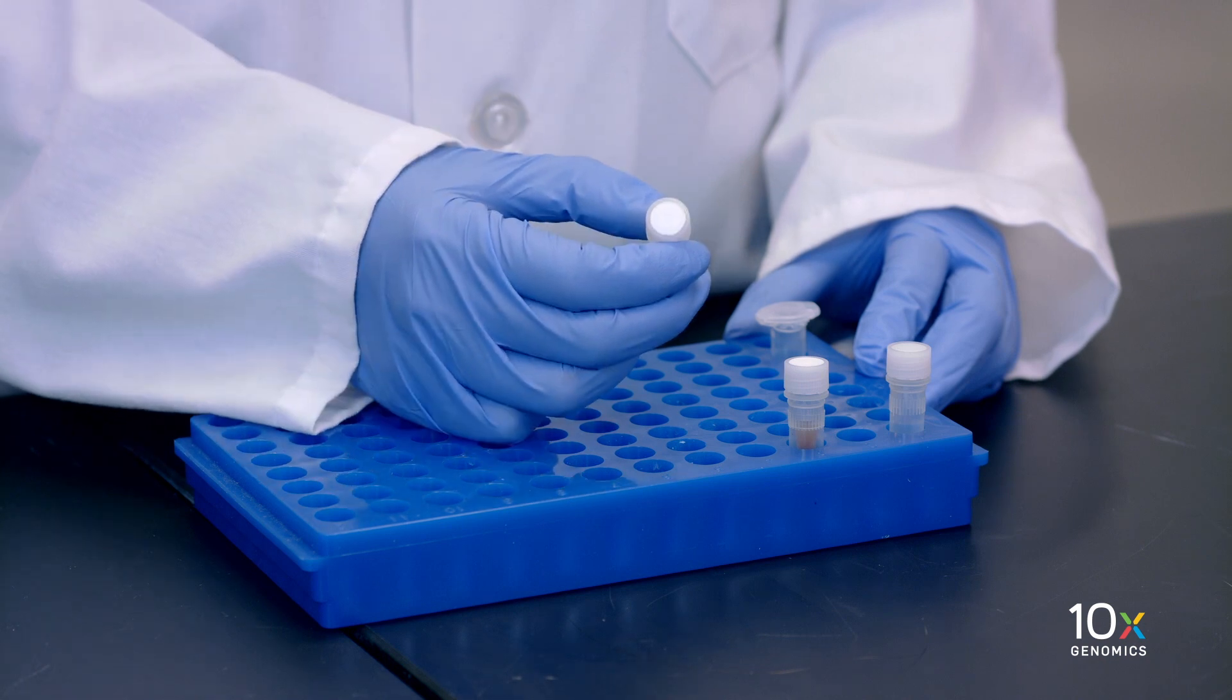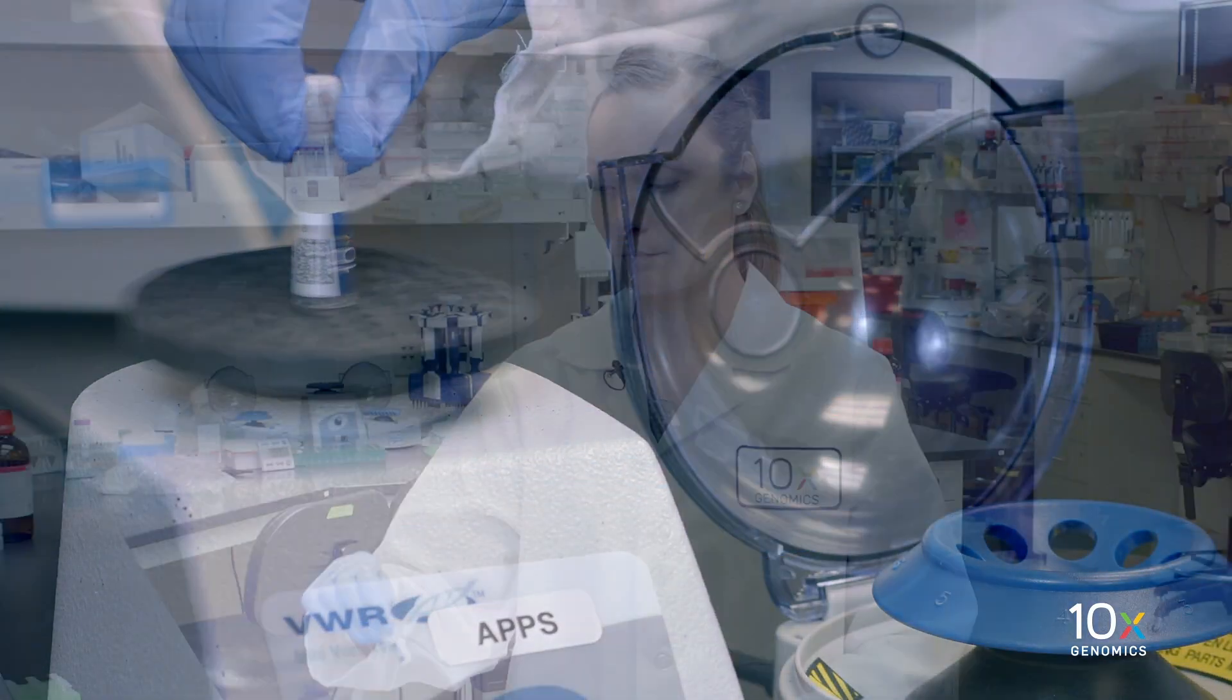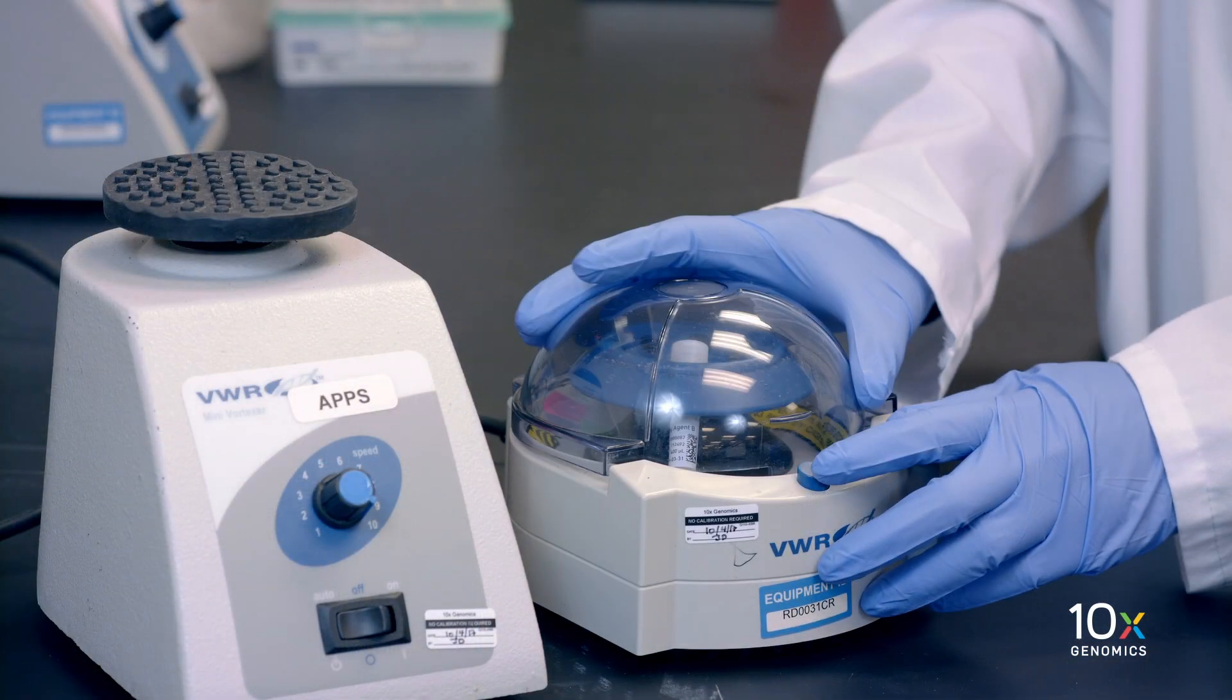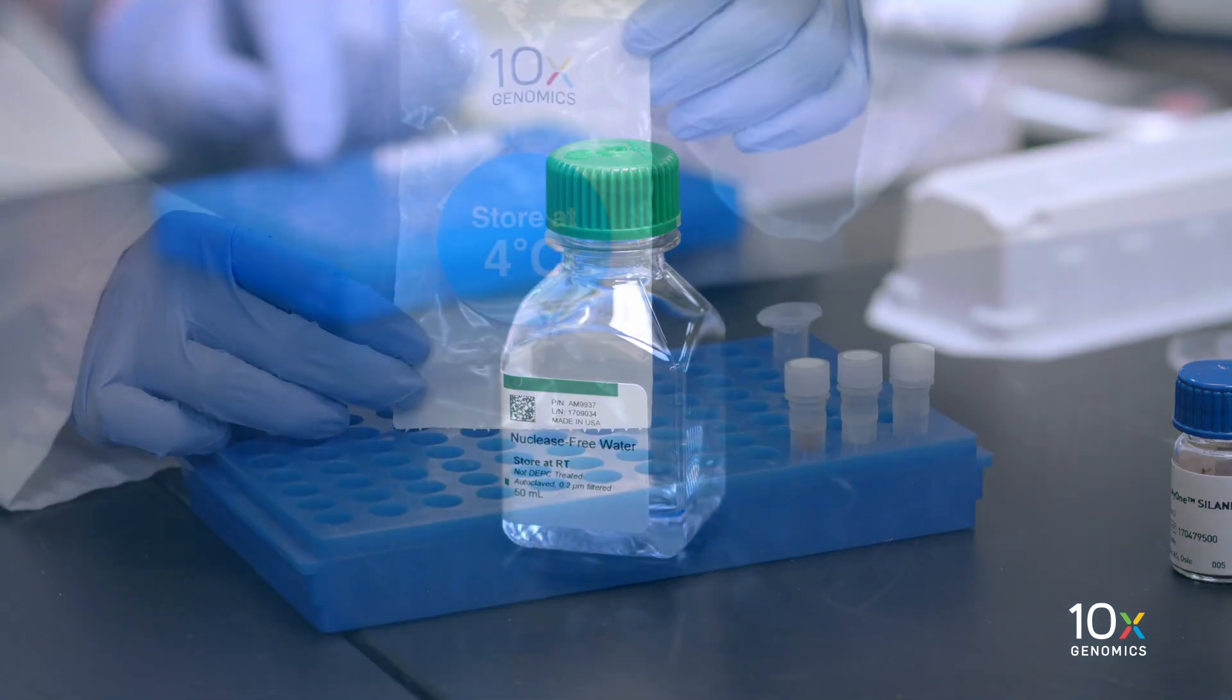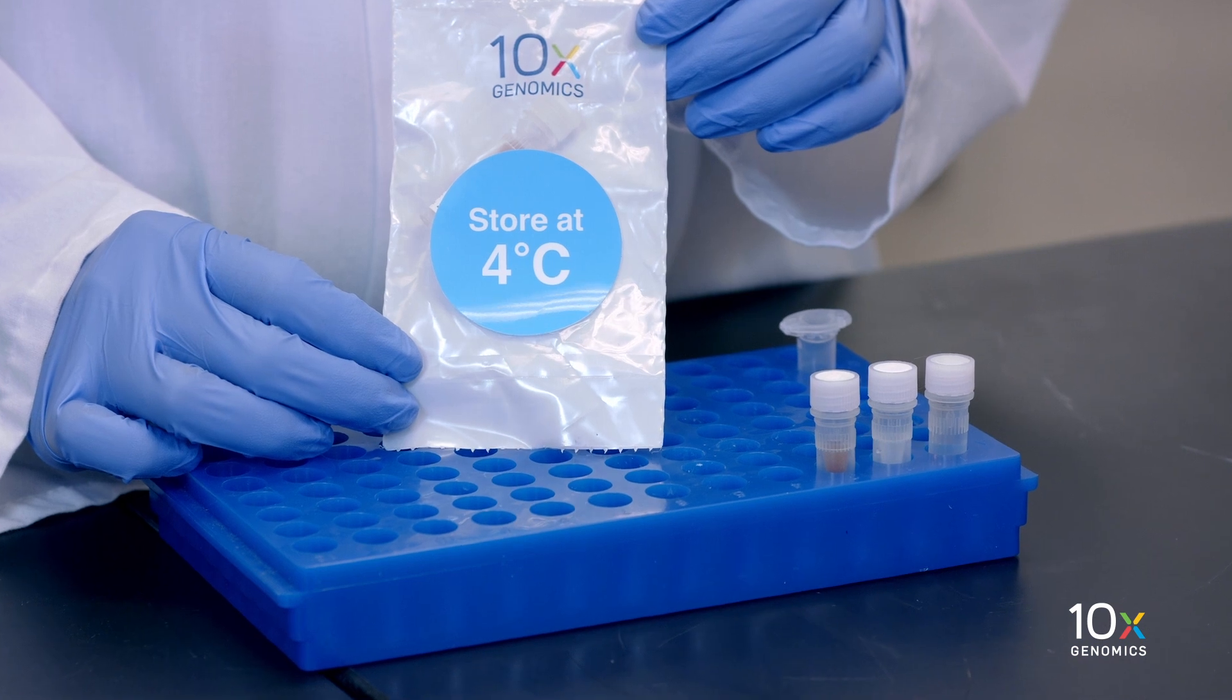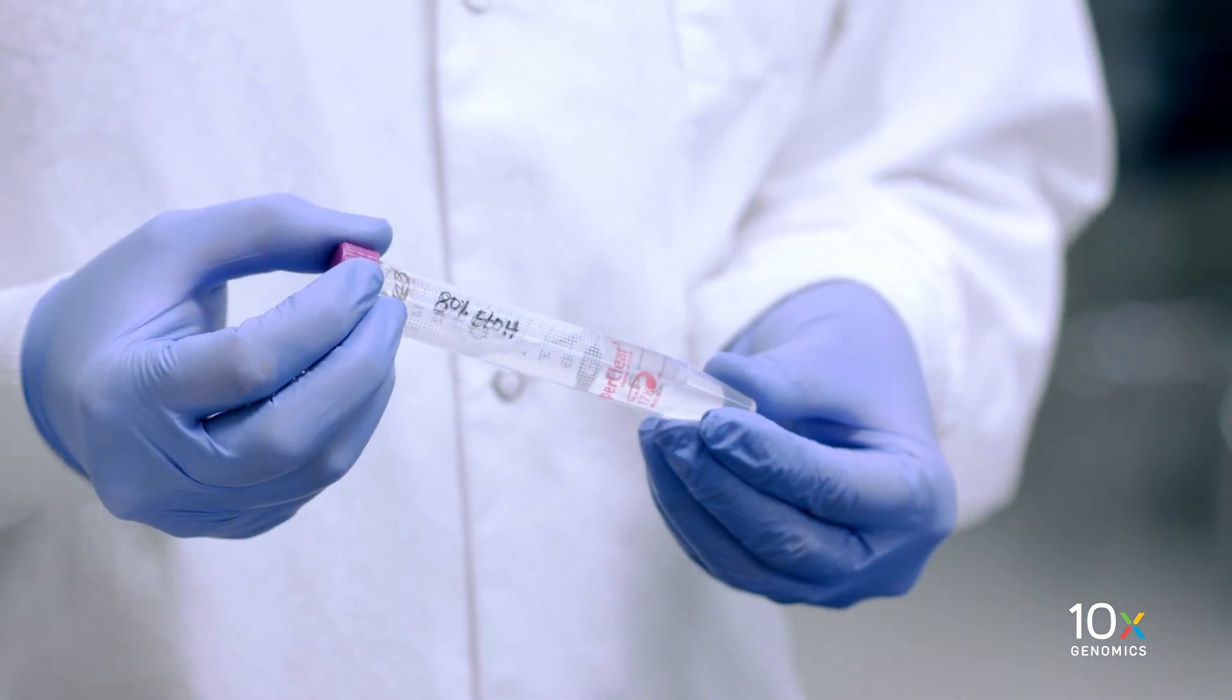We have reducing agent B, which we equilibrate to room temperature and vortex. We verify there is no precipitate and spin down. We have nuclease-free water. We have our DynaBeads, which have also been equilibrated to room temperature. Finally, we have a freshly prepared solution of 80% ethanol.